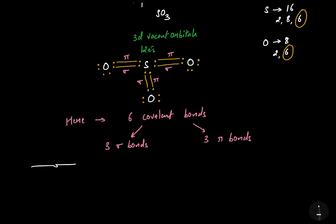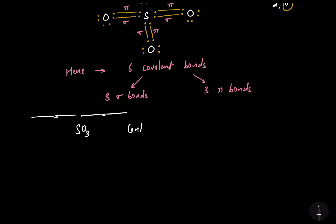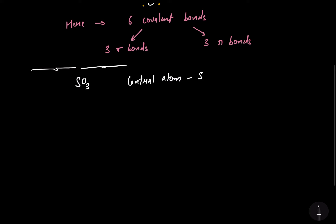In case of SO3, the maximum number of bonds are formed by sulfur — that's 6. So the central atom will obviously be sulfur, and we are going to talk about the hybridization of the sulfur atom. The atomic number of sulfur is 16, and the valence electronic configuration of sulfur will be 3s2, 3p4. The valence shell is the third shell, which has an s subshell, p subshell, and also a vacant d subshell.